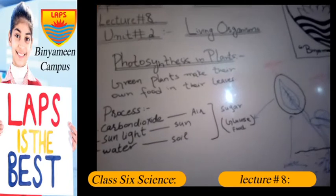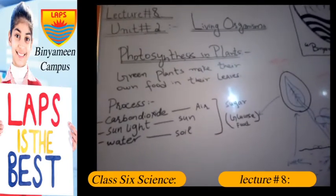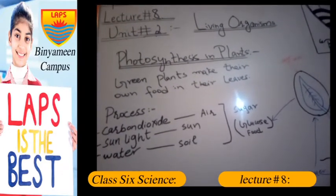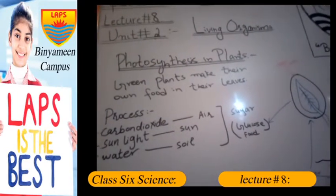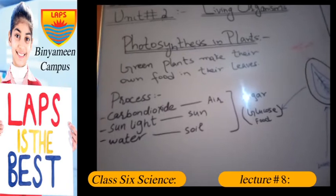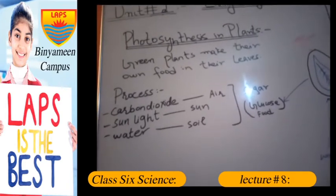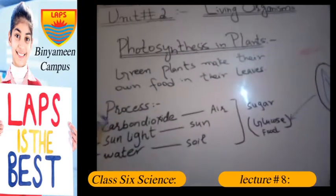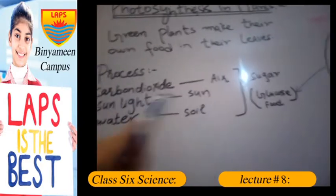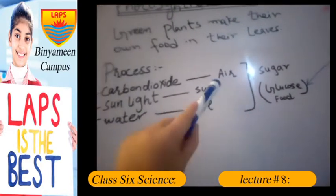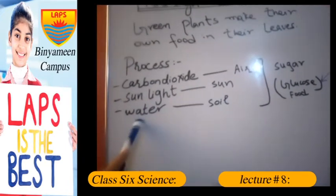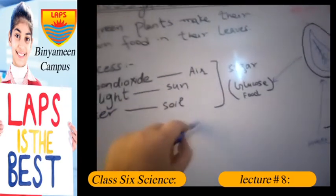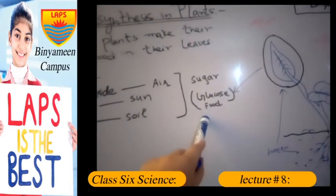Green plants make their own food in their leaves. We have discussed in many lectures that plants make their own food in their leaves. In this process, the elements used are: carbon dioxide gas, sunlight, and water which is absorbed by the roots. The plants produce glucose, which also means sugar.